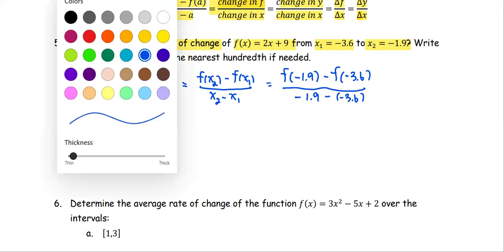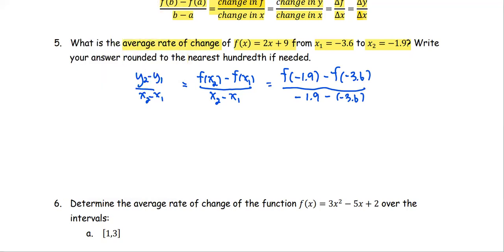For the function at negative 3.6, we plug it into the function notation, which is 2 times the quantity x, which is negative 3.6, plus 9. We obtain the value 1.8. And for the function at negative 1.9, which is 2 times negative 1.9 plus 9, the number comes out to be 5.2.